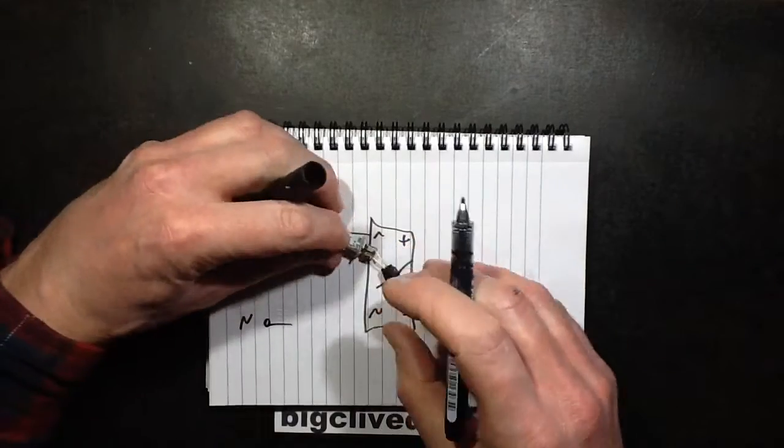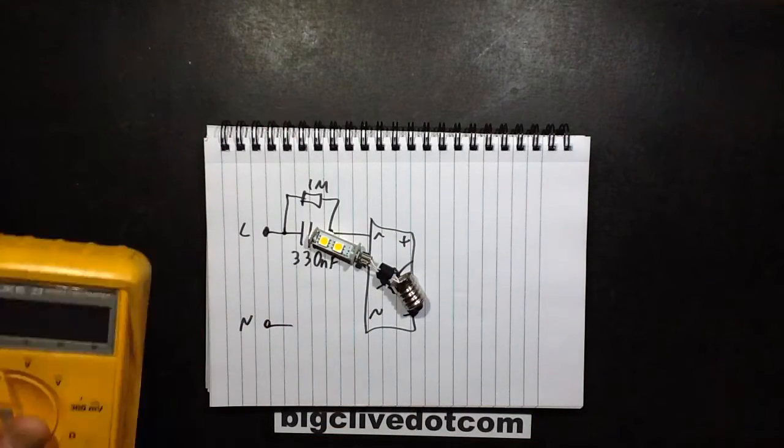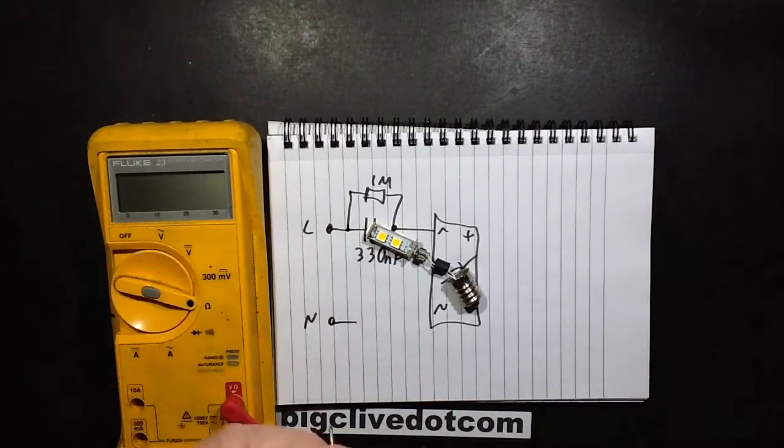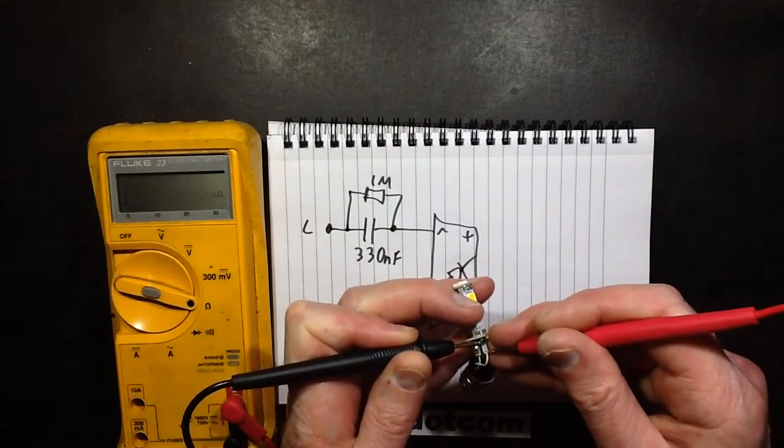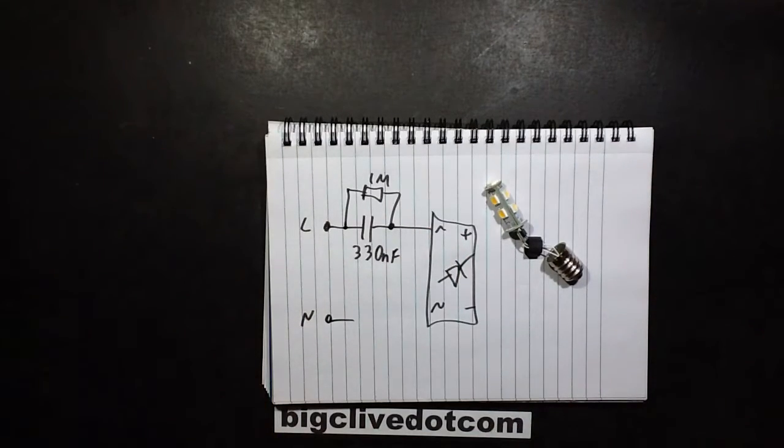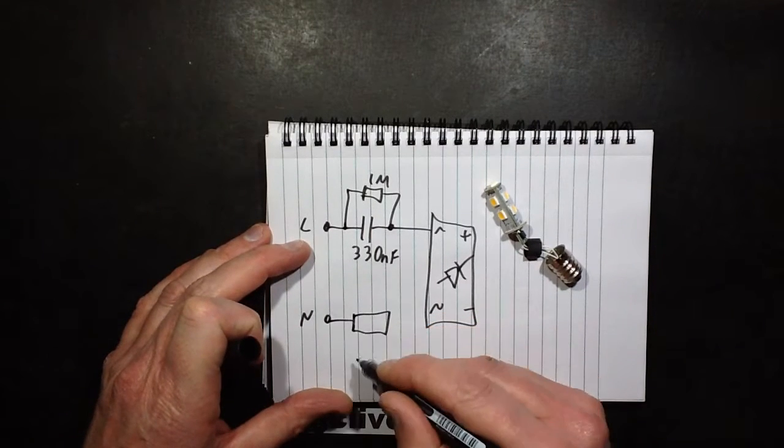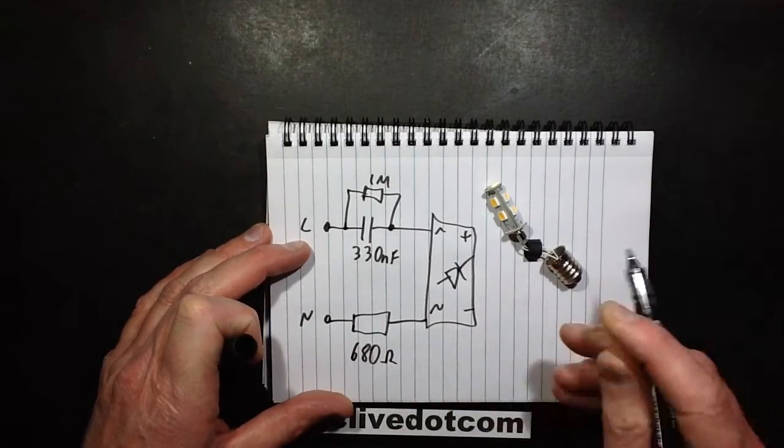But was it 680 ohm? A meter. Yeah, 680 ohms. And that will really limit the inrush current. 680 ohms. And it's quite a beefy resistor as well. So it's designed to take a bit of punishment.